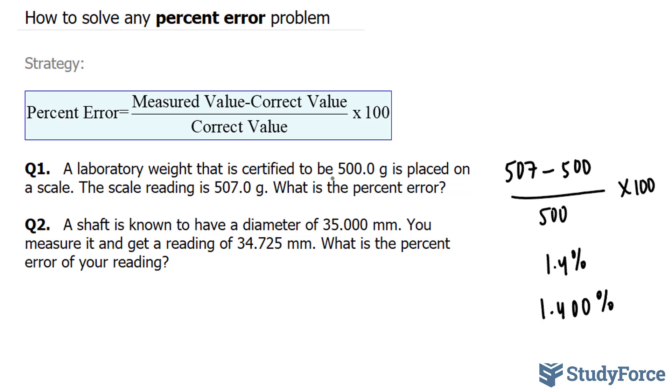In question two, they ask, a shaft is known to have a diameter of 35.000 millimeters. You measure it and get a reading of 34.725 millimeters. What is the percent error of your reading? Once again, we have a very similar problem.